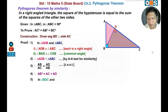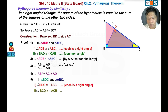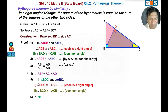In triangle BDC and triangle ABC: angle BDC is congruent to angle ABC, each equal to 90 degrees. Angle BCD is congruent to angle ACB — common angle. Therefore triangle BDC is similar to triangle ABC by the AA test of similarity.